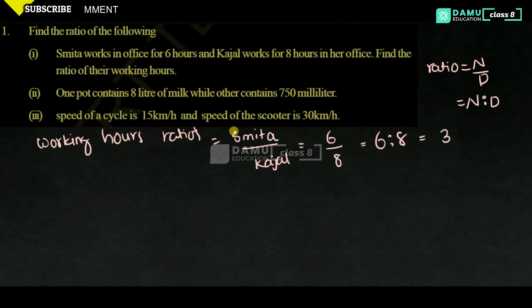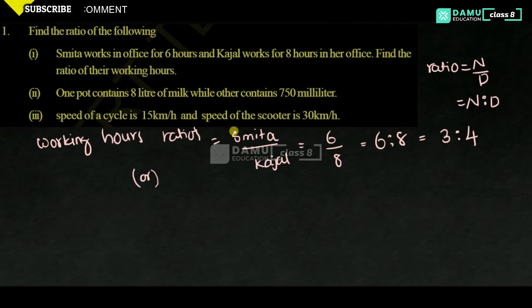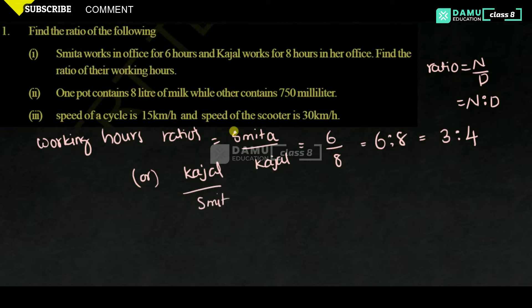Or you can simplify: 2 threes are 6 and 2 fours are 8, so the ratio is 3 is to 4. Or you can also take the ratio as Cajal to Smither.